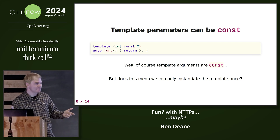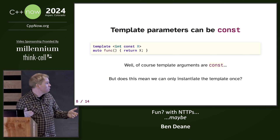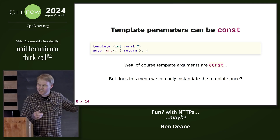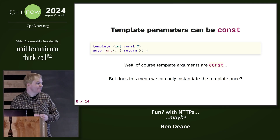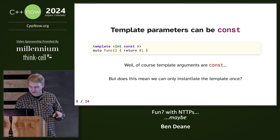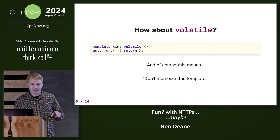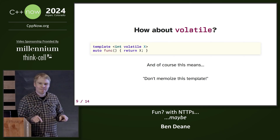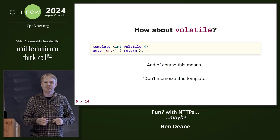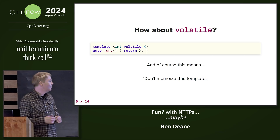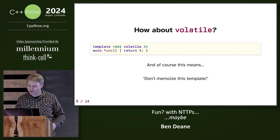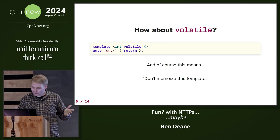Of course, template parameters can be const. That's fine. Does that mean we only instantiate the template once, because that has to be const? You know what's coming, don't you? If it can be const, it can be volatile. What meaning could this have? Well, it obviously means don't memoize this template. This works — the compilers are fine with this.